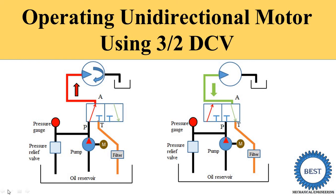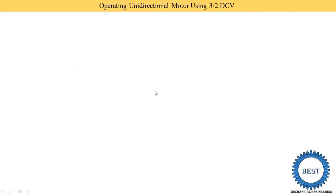In this video, I explain hydraulic circuit designs where a unidirectional motor is used, operated by a 3 by 2 DCV — DCV means directional control valve. I explain this using animation so you can easily understand how the system works. First, we understand what the symbol of the unidirectional motor means, and what is the meaning of a 3 by 2 DCV.